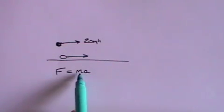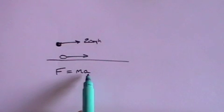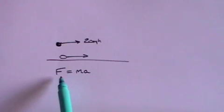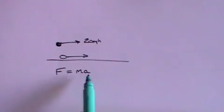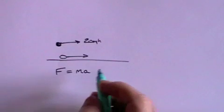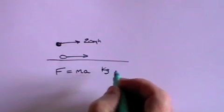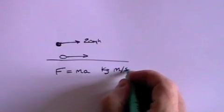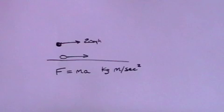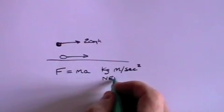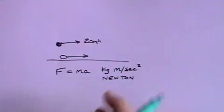It says if you want to change the velocity — and a change of velocity is acceleration — if you want to change the velocity of the mass, you have to apply a force equal to the mass times the acceleration. The units of force are mass, which is kilograms, times acceleration, which is meters per second squared. But that's rather clumsy, so that is usually replaced by the unit called the Newton.